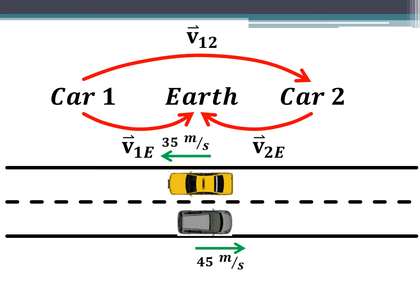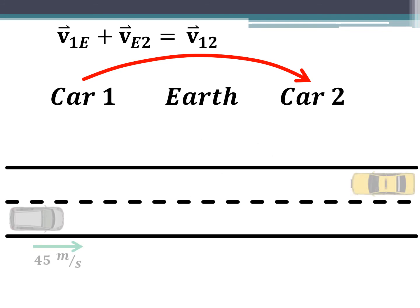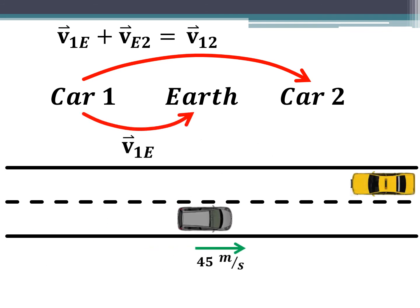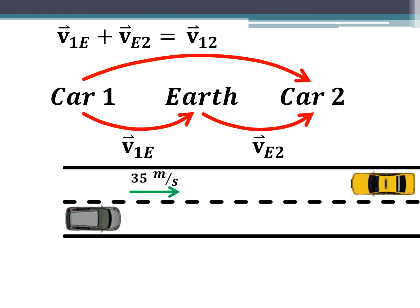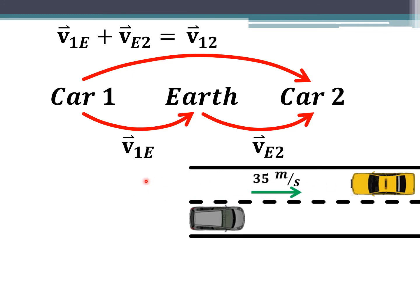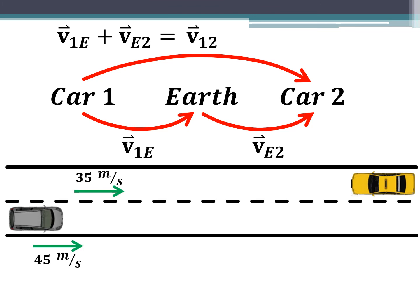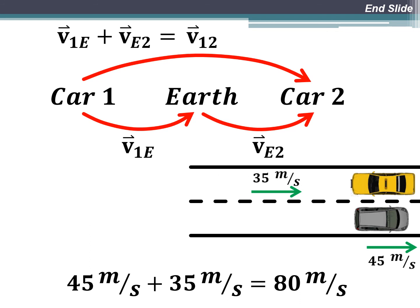To get the total velocity of car one relative to car two, we take the velocity of car one relative to the earth — 45 meters per second — and add the velocity of the earth relative to car two — 35 meters per second east, which is the flipped direction. Both vectors now point east and add together to give a total of 80 meters per second. The velocity of car one relative to car two is 80 meters per second — that's why oncoming cars always look like they're going faster.